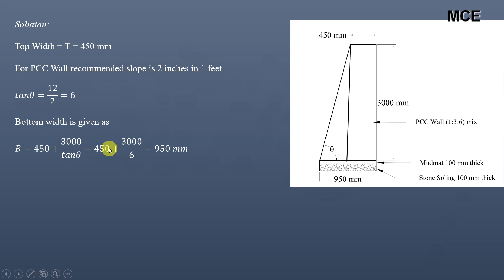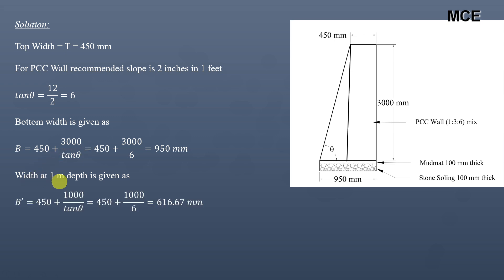This bottom width is based on a slope of 2 inches in 1 foot — moving 2 inches horizontally for every 1 foot vertically. You can also find the width at any given depth. For example, the width at 1 meter depth from the top = 450 + 1000 ÷ 6 = 616.67 mm. That covers the SI unit case. In US conventional units the calculation is even simpler.